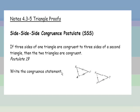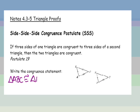So we need to write a congruence statement. We've got triangle ABC here, and it is congruent to triangle — we need to make sure we are doing our corresponding parts. If A to B to C, then we go R to S to T. So triangle RST. Remember, the order matters because it means that angle A corresponds to angle R and so on.